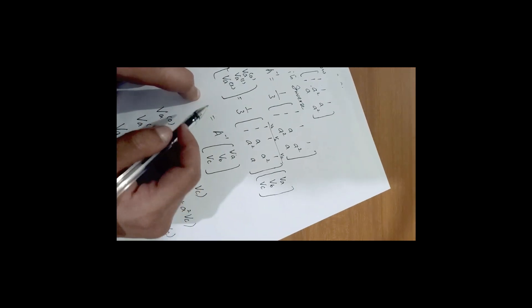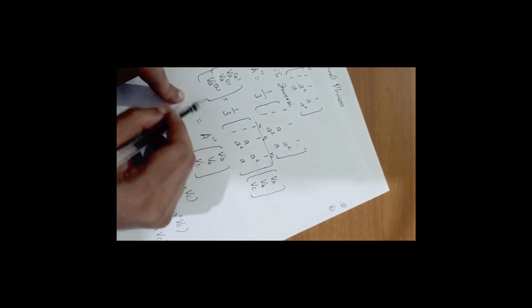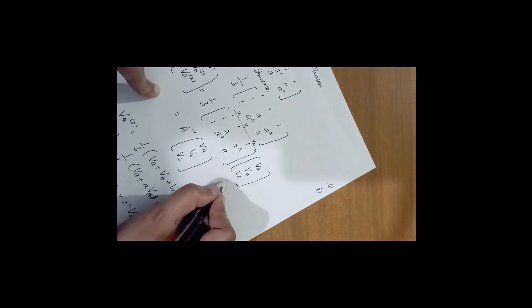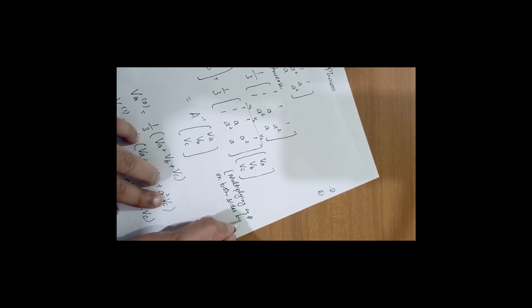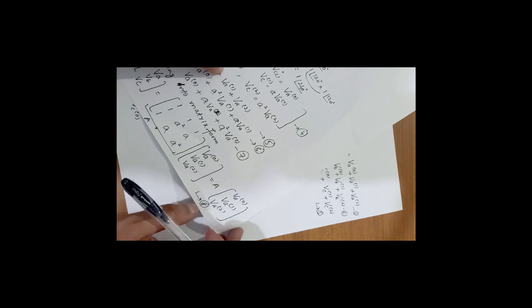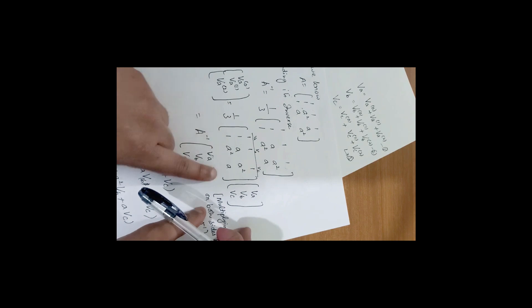This equation was achieved by multiplying equation 8 on both sides by A inverse. A inverse and A cancel out, leaving [Va0, Va1, Va2] alone, while A inverse multiplies the right-hand side [Va, Vb, Vc]. That is how we achieved this equation.